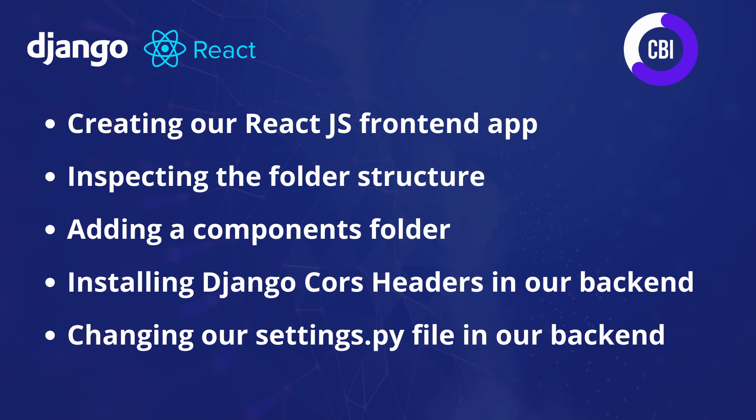We're going to do that by following five steps. We'll start by creating our React.js frontend app with one single command, then inspect the folder structure that command creates, add a components folder ready for upcoming videos, and finally make sure React can communicate with our Python Django backend by installing django-cors-headers and updating our settings.py file.